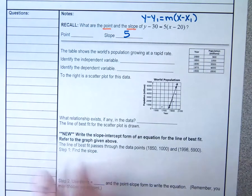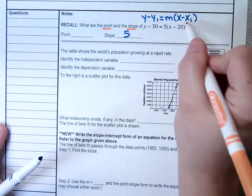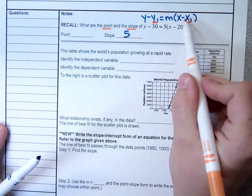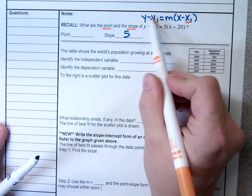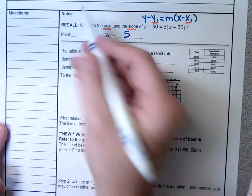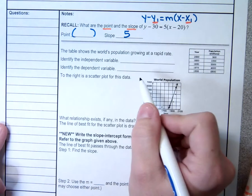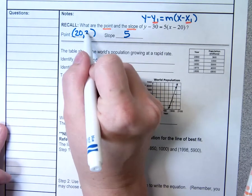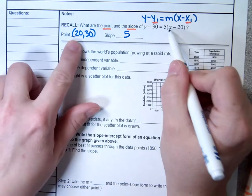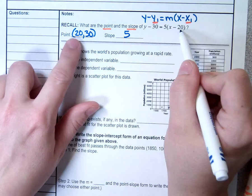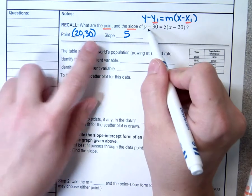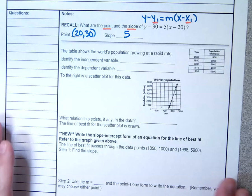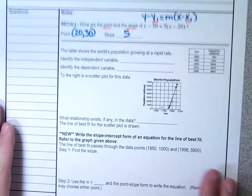Your point is always the x1, y1. The x-coordinate goes behind this minus, and the y-coordinate goes behind this minus. So what is the point? It's (20, 30). That's why it goes x minus the x-coordinate 20, and y minus the y-coordinate 30. Just a little review there.